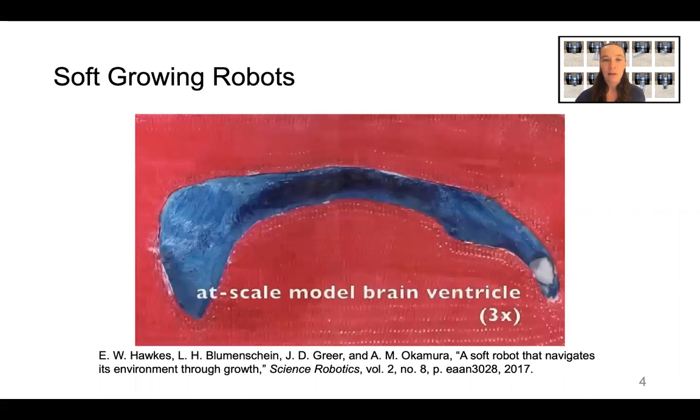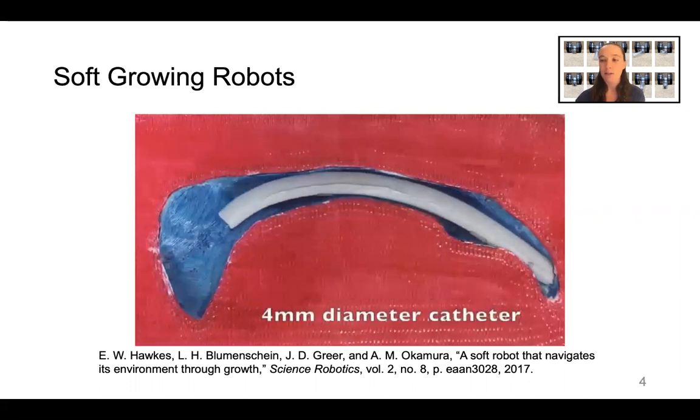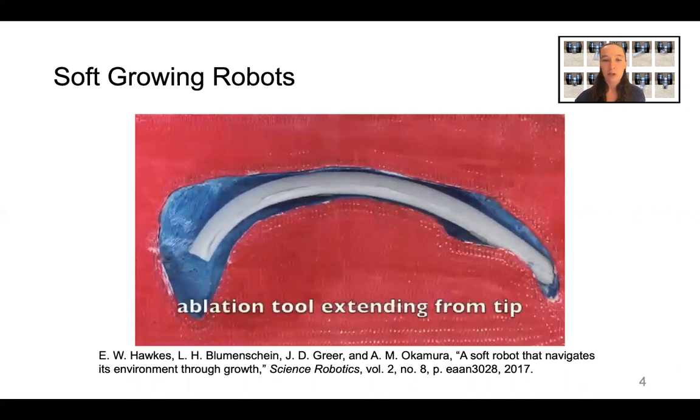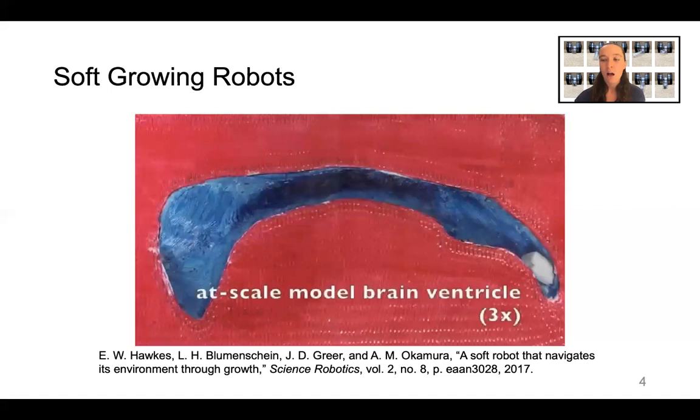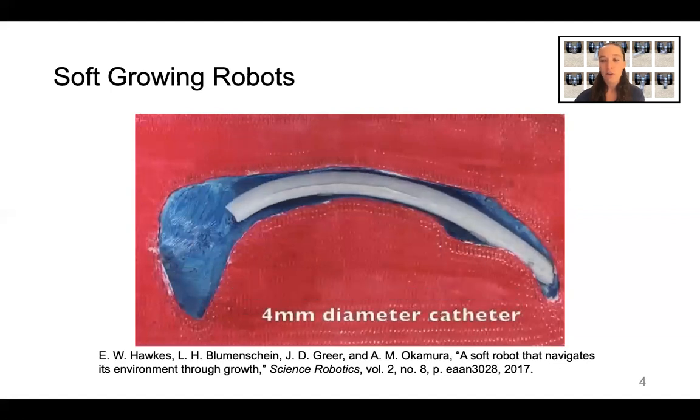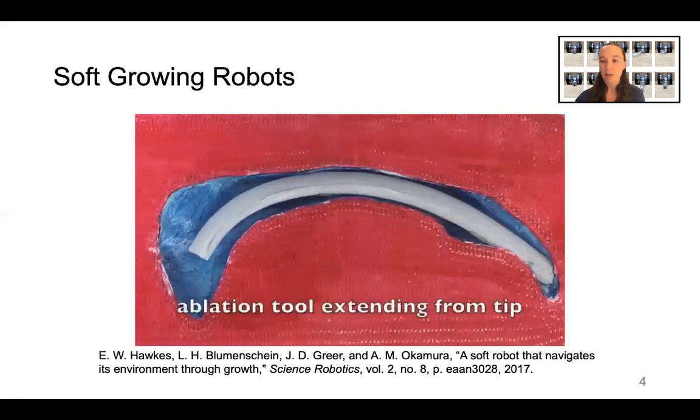These robots extend without sliding of their body material relative to the environment, so they have been proposed for applications where delicate interaction is necessary. Also, their bodies can be used as a conduit for tools, sensors, and other devices because they leave a trail where the tip has gone.